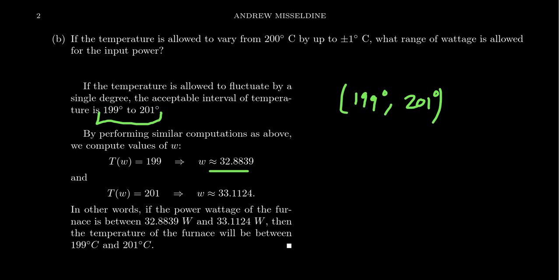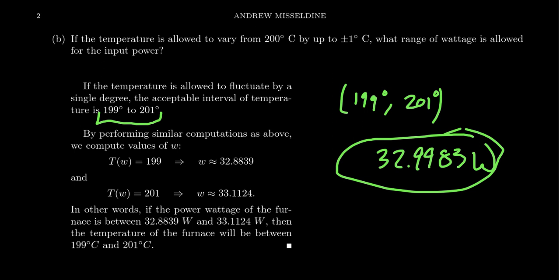This right here is the allowable fluctuation in the temperature. So this gives us an interval of temperatures from 199 to 201. This is considered acceptable. Well, if you take the function from the previous slide, you have to solve that equation. Set T(W) equal to 199, you subtract 199 from both sides, put in the quadratic formula. If you approximate your answer, you'll get approximately 32.8839. On the other hand, if we want to figure out how high can we get in terms of wattage, if you set that equal to 201 and solve the resulting quadratic equation, you'll get approximately 33.1124.